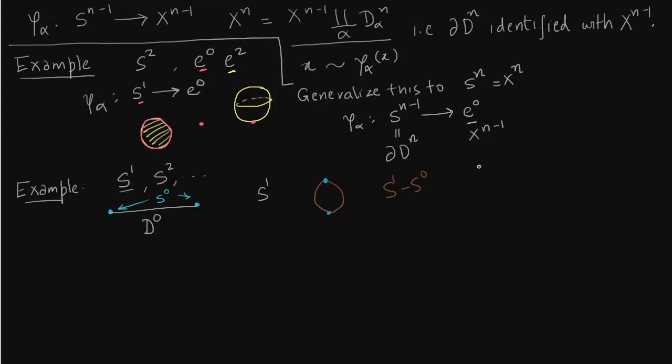From circle you take two points out you get two arcs and these two arcs you combine it back to S^0. So let us write it down.